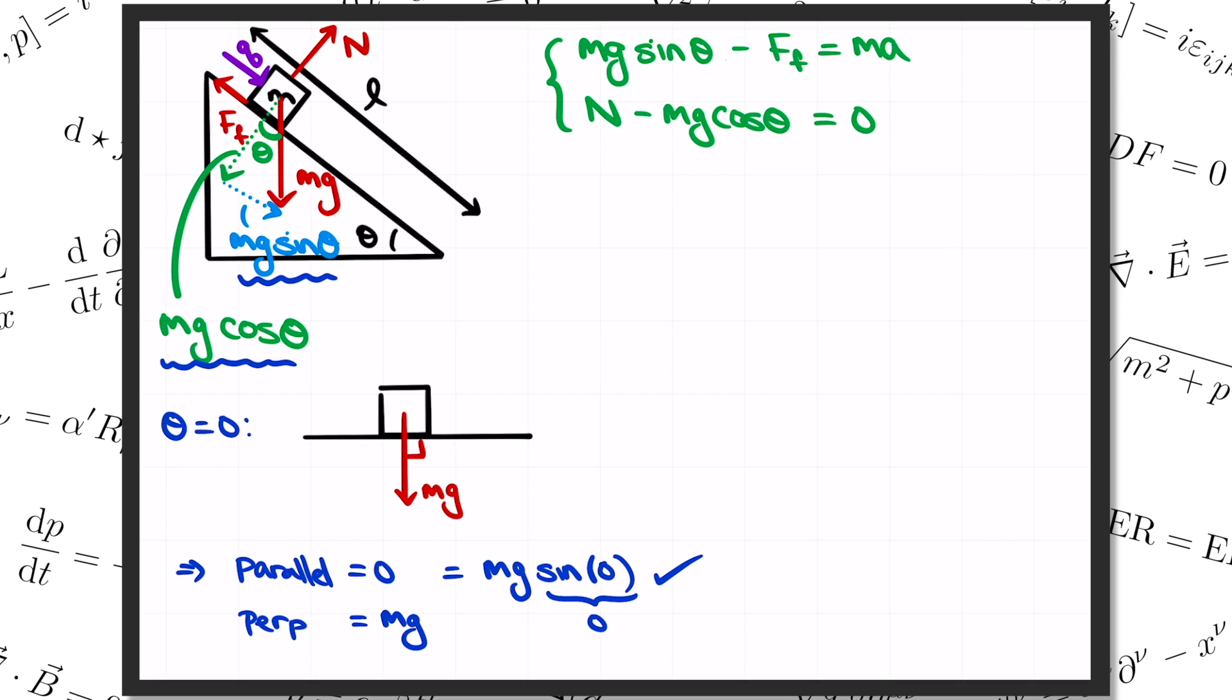So back to our F equals ma equations. The perpendicular equation is just telling us what the normal force has got to be in order to keep the block from falling through the table. It's N equals mg cosine of theta. It's the parallel equation that's really more interesting here. To unpack it though, we need to know what this friction force is. Now anytime you're dealing with friction forces, the first thing you want to ask yourself is whether you're talking about a static friction force or a kinetic friction force. Friction is static when two objects are pushed up against each other but not sliding. If the block were just sitting at rest on the ramp, for example, then we'd have a static friction force. Kinetic friction comes in when two objects are sliding against each other. And since we're assuming here that the block starts to slide as soon as you set it down on the ramp, we are dealing with kinetic friction.